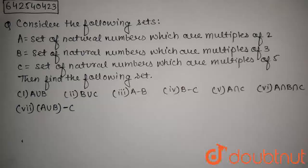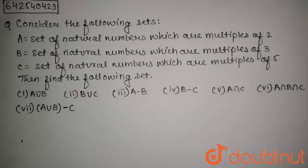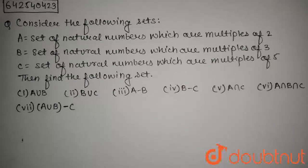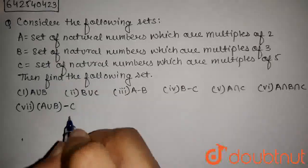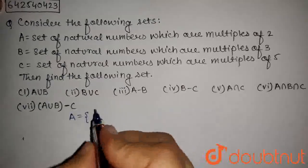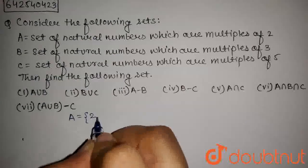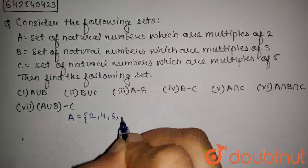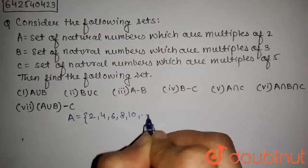The question is: consider the following sets. A equals the set of natural numbers which are multiples of 2. In roster form, this set contains elements 2, 4, 6, 8, 10, and so on.